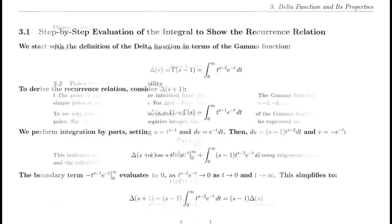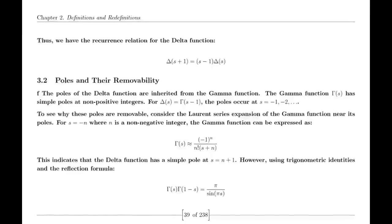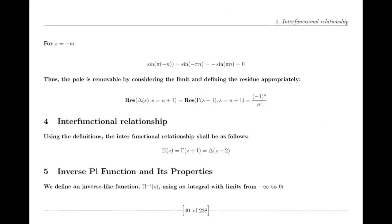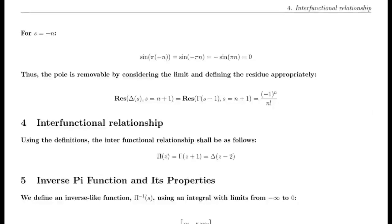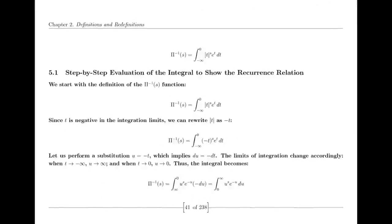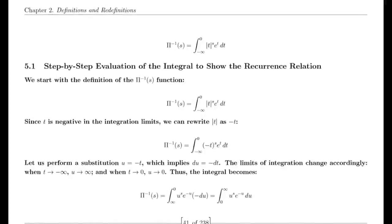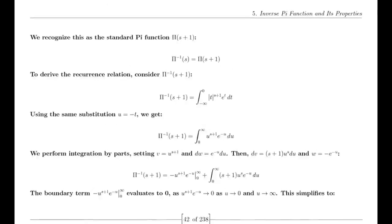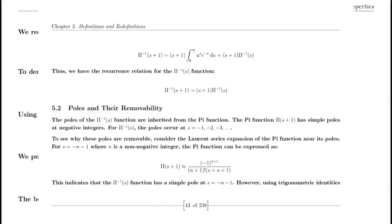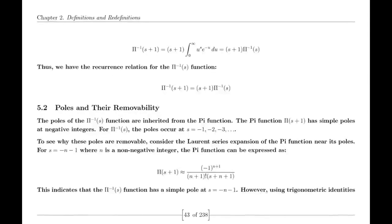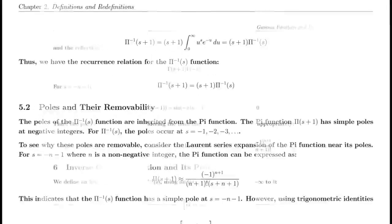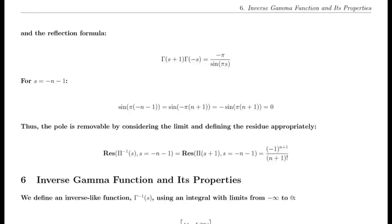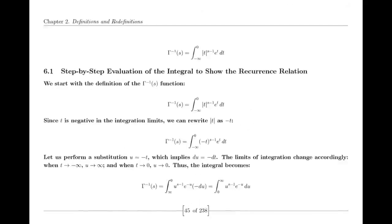The broader public began to take notice, intrigued not just by the Riemann hypothesis but by the very nature of mathematical discovery. Suraj's story sparked conversations about the accessibility of mathematics, bridging the gap between formal academia and everyday understanding. As the community wrestled with his ideas, they began to appreciate the importance of diverse perspectives in mathematics. Some critiques evolved into constructive discussions, leading to collaborations that combined Suraj's straightforward approach with more advanced techniques. In this environment of collaboration and dialogue, the essence of mathematics shone through — a vibrant tapestry woven from many threads, each contributing to a greater understanding.